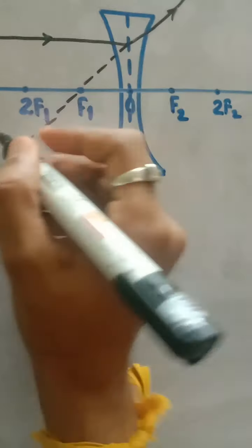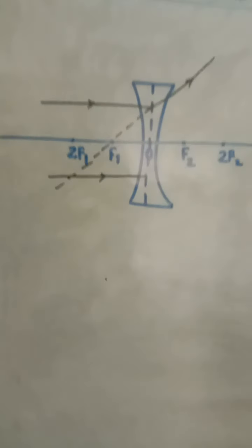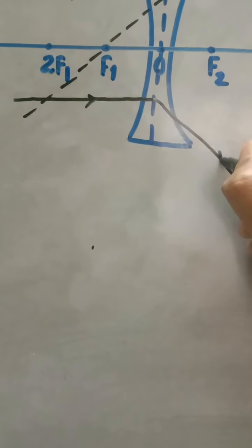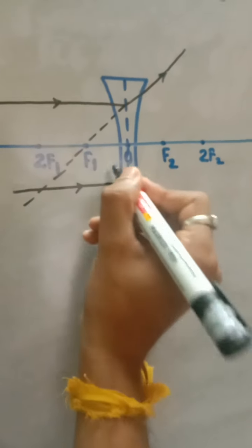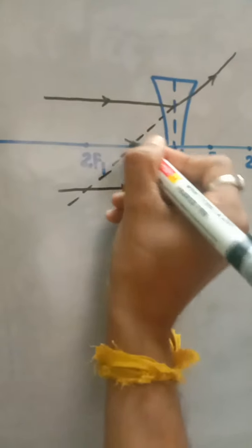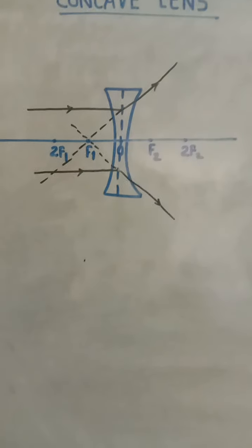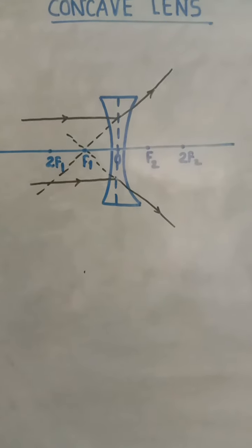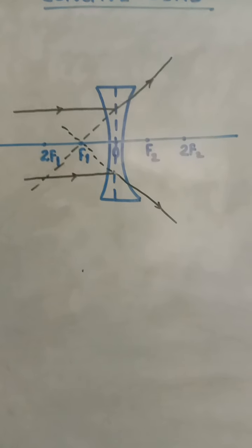Another example: suppose the ray of light is coming parallel, it hits the lens, it gets diverged. So if you extend this, it will appear that it is passing through the focus. So this is rule number one.